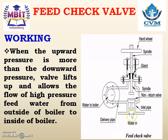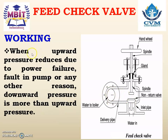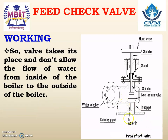If the pressure of feed water is high, the non-return valve will lift up and water will enter into the boiler. When upward pressure reduces due to power failure, fault in pump, or any other reason, the downward pressure becomes greater than the upward pressure. In that case, the valve takes its place and does not allow the flow of water from inside of the boiler to the outside of the boiler.